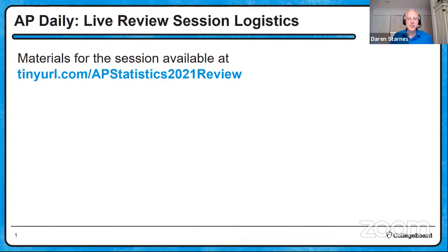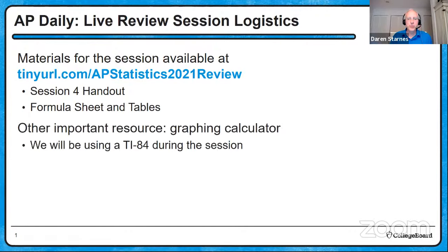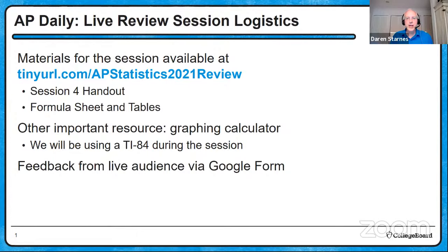For session three, the materials for our session will be available at tinyurl.com/APstatistics2021review. You'll find the session four handout — that's the one you want for this session — and also a copy of the formula sheets and tables, which we'll be accessing at a couple of points in the session. Another important resource we'll be using today is the graphing calculator. I'll be using the TI-84; you're welcome to use whatever calculator you're planning on using for the AP exam.